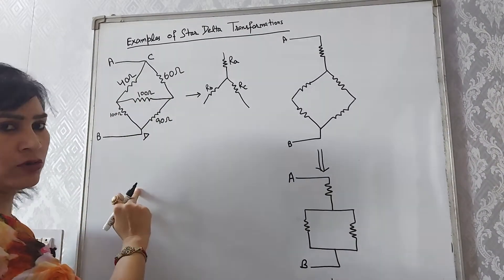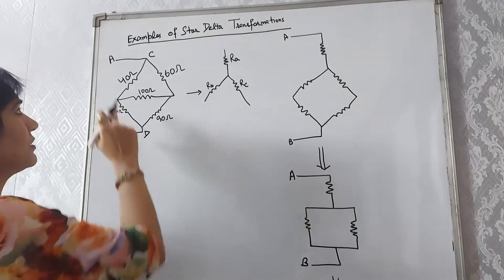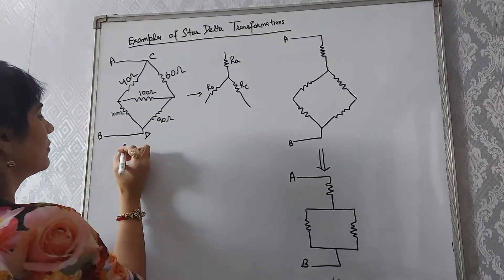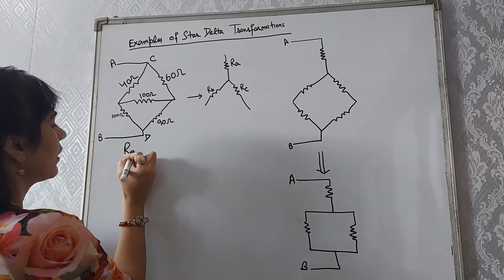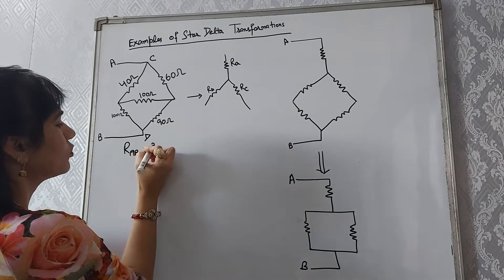Now we have to find out the equivalent resistance between A and B, means RAB we have to find out.